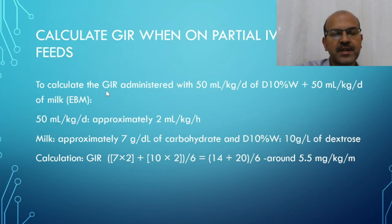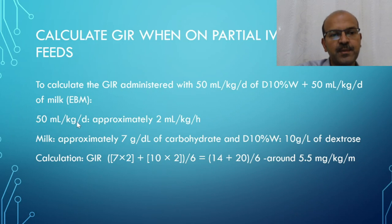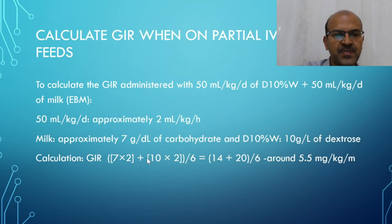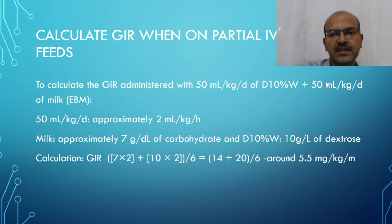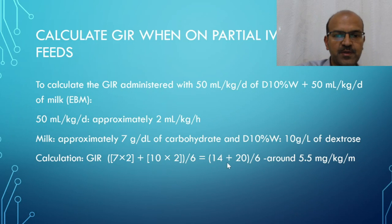For partial IV and partial feeds, the calculation is straightforward. If a baby is on 50 ml/kg of 10% dextrose and 50 ml/kg of expressed breast milk (EBM), that's approximately 2 ml/kg/hour each. Milk has ~7 g/dL and dextrose has 10 g/dL. You calculate proportionately: 7 × 2 ml/hour plus 10 × 2 ml/hour — adjusting the ml/hour individually based on the actual proportions used.